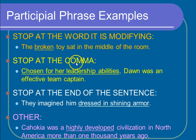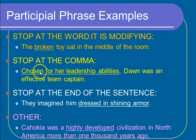Now let's look at stopping at the comma. 'Chosen for her leadership abilities, Dawn was an effective team captain.' Which Dawn was an effective team captain? The one that was chosen for her leadership abilities. In this sentence, I'm stopping at the comma. So, 'chosen for her leadership abilities' is my participial phrase.